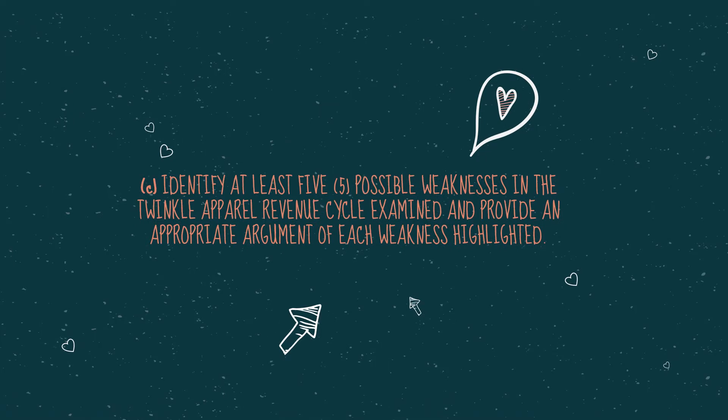Hi, I'm Natasha Binti Muhammad Sawfi, metric number 273080. I'm going to present Part A, question C, which asks us to identify at least 5 possible weaknesses in the Twinkle Apparel Revenue Cycle and provide an appropriate argument for each weakness highlighted.